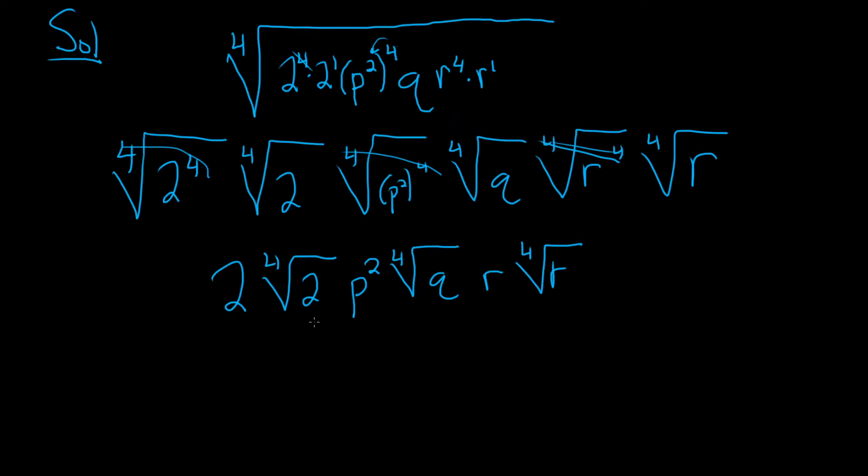And let's see here. We're left with, let's put everything that doesn't have a root out front. So everything that doesn't have a root, we'll put it out front. So it'll be 2p squared r. And then everything that's left is in the 4th root. So we can put it back together. So we'll have the 4th root of 2qr. Boom. And there it is.